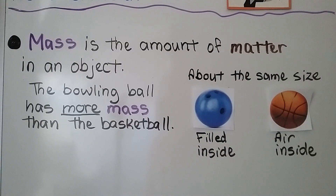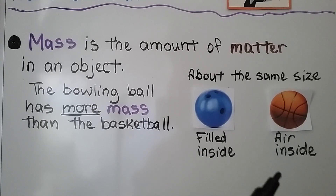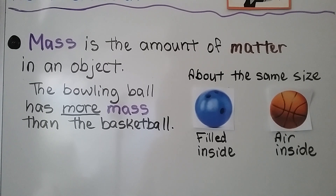Mass is the amount of matter in an object. Look at the bowling ball and the basketball — they're both about the same size. The bowling ball has more mass than a basketball because the bowling ball is filled inside, while the basketball has air inside. So even though they're about the same size, the bowling ball has more mass.